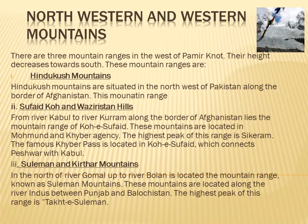Northwest and Western Mountains: In the west of Pamir Knot, the height decreases towards the south. Its ranges are Hindukash Mountains, Kohhe Sifat and Waziristan Hills, and Suleyman and Kirthar Mountains. The Hindukash Mountains are situated in the northwest of Pakistan along the border of Afghanistan.